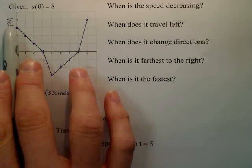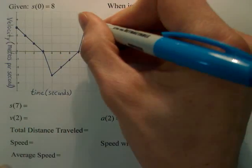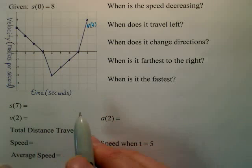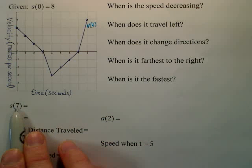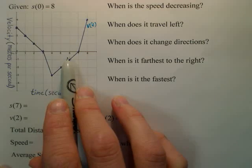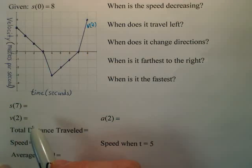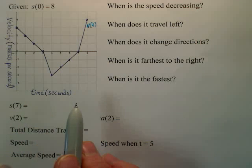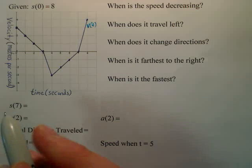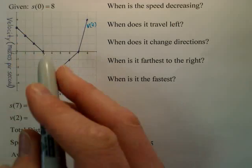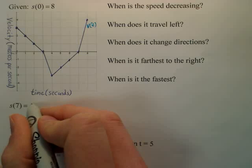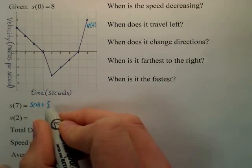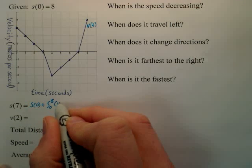This graph is the velocity — this is V of T. If I want to find S of 7, but the graph has velocity and it's all we're given, and we're given the initial position — well, if I integrate velocity, doesn't that get you down to position? The basic idea is you want to start at 8, the initial position, S sub 0, and add the change from 0 to 7 of velocity.